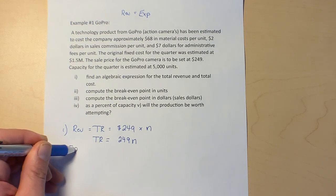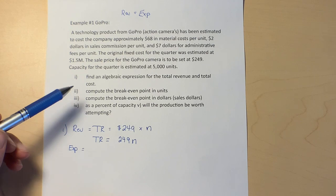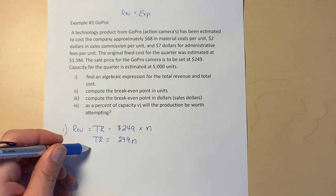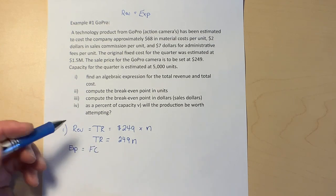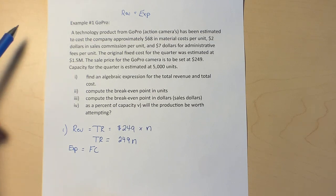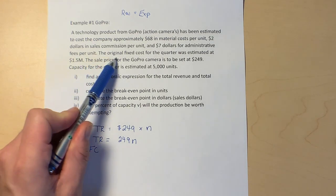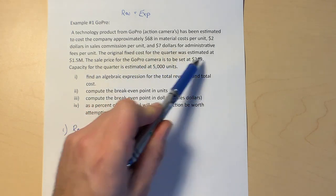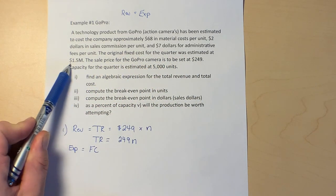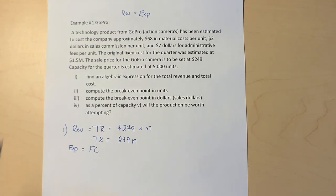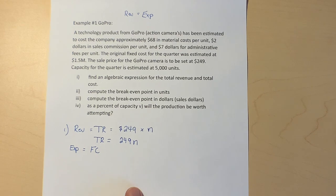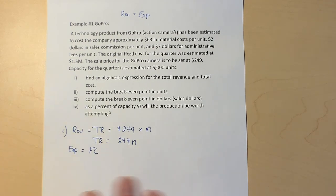If we look at expenses, expenses are going to be made up of two things: the fixed costs, which in this case does not depend on the number of units that we sell. The original fixed cost for the quarter was estimated at $1.5 million. That's things like rent and salaries and delivery vehicles and stuff like that.